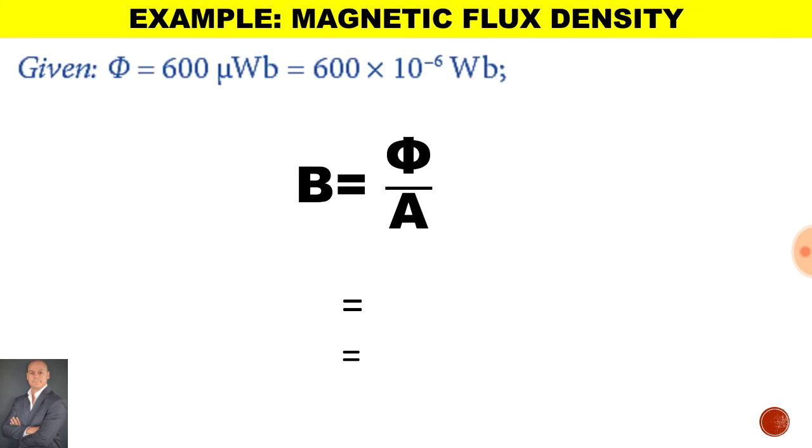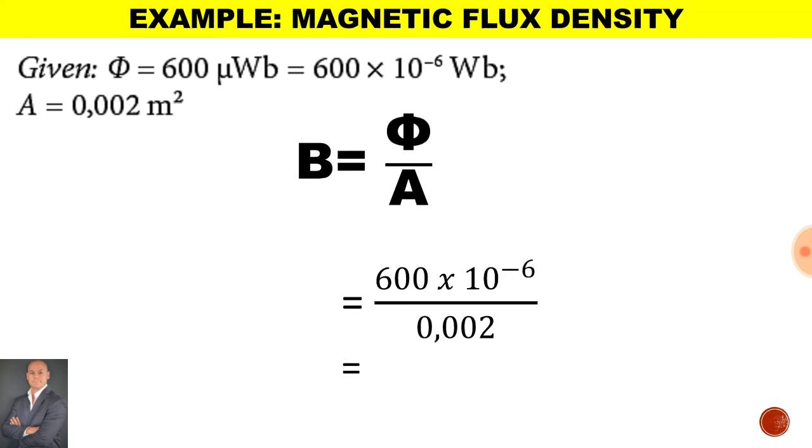Now if we are given a magnetic flux of 600 microWeber, it is equal to 600 times 10 to the minus 6. If the area is 0.002 meters squared, if we substitute the values into our equation, we end up with a magnetic flux density of 0.3 Tesla.